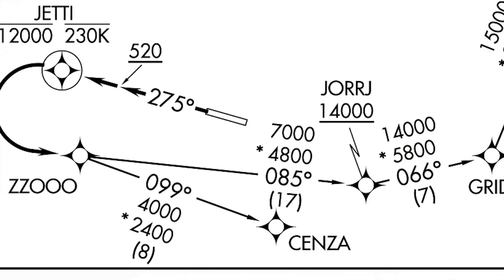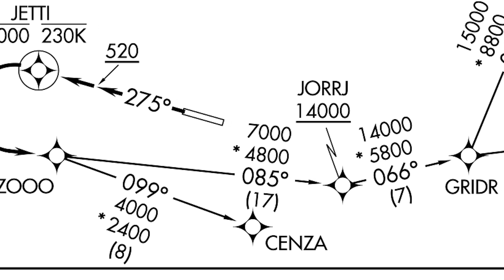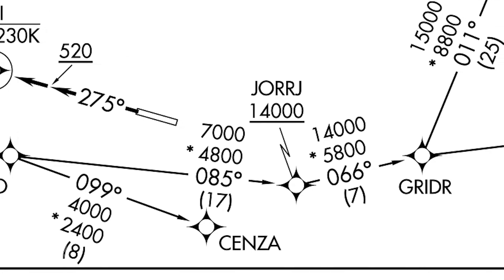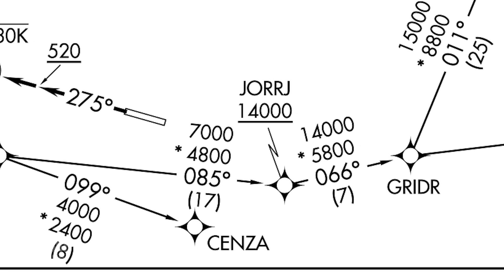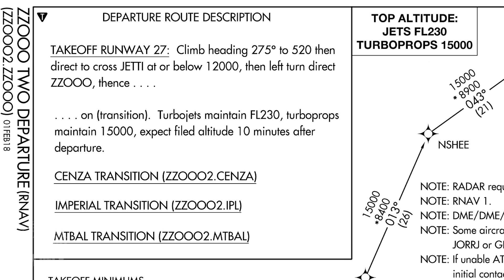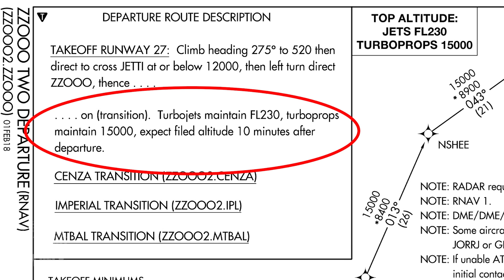After crossing the ZOO waypoint we have our first transition option. A transition connects you with the rest of your flight plan — at this point flying the SID or STAR is over. If SENZA was our transition, we would track a heading of 099. The departure description gives one last instruction that if we're a turbojet, we won't fly higher than flight level 230 while on the transition. And if we're a turboprop, this altitude restriction is flight level 150.